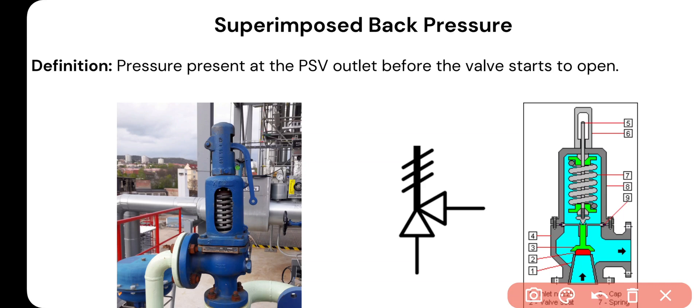In this video we are going to discuss two important backpressure types considered while sizing or selecting the PSV: superimposed backpressure and built-up backpressure. Backpressure is the pressure which exists at the outlet of the PSV. At the outlet of the PSV there will be one valve, and whatever pressure exists at that outlet is called the backpressure.